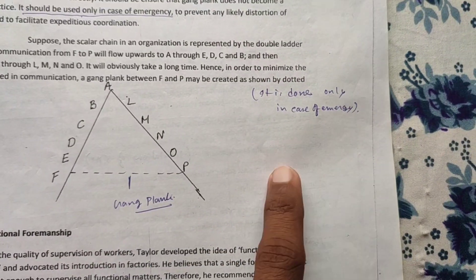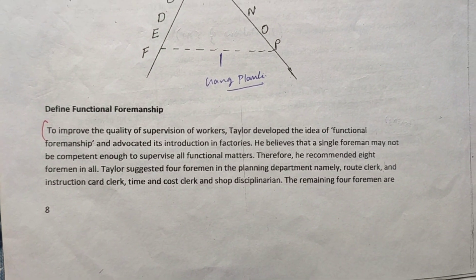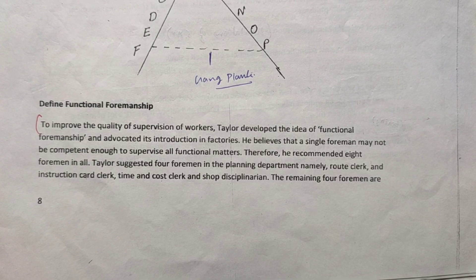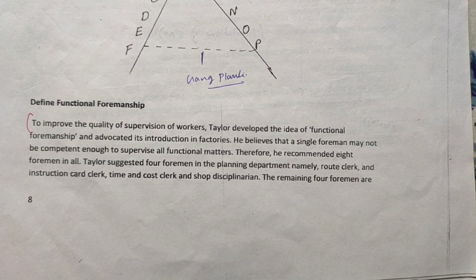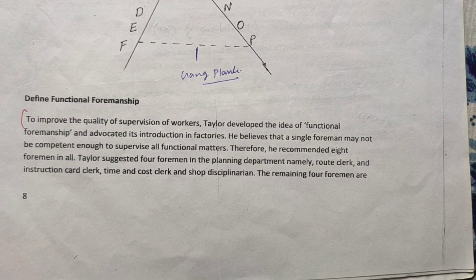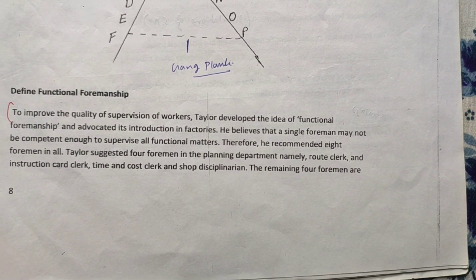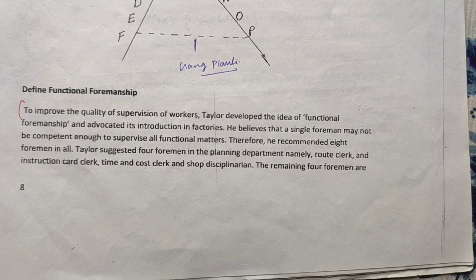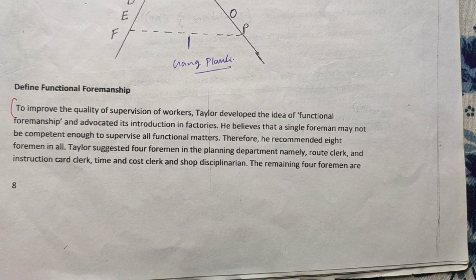It is done only in case of emergency. To improve the quality of supervision of workers, Taylor developed the idea of functional foremanship and advocated its introduction in factories. He believed that a single foreman may not be competent enough to supervise all functional matters. Therefore, he recommended eight foremen in all.